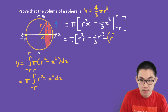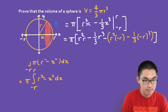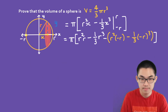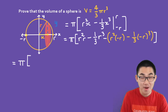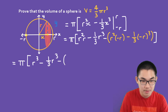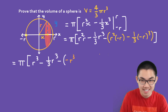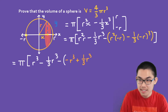We subtract the lower bound: R squared times negative R, minus 1 over 3 times negative R cubed. Expanding, we get pi times R cubed minus 1 over 3 R cubed, and then minus negative R cubed plus 1 over 3 R cubed. So R squared times negative R is negative R cubed, and that term becomes plus 1 over 3 R cubed.